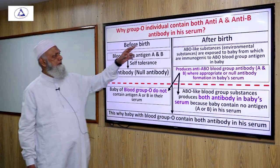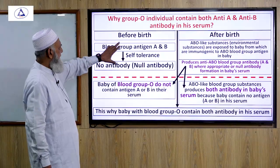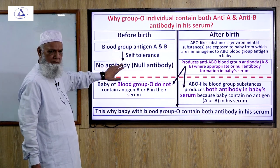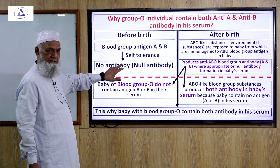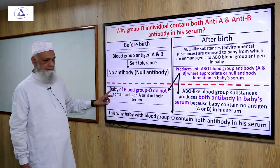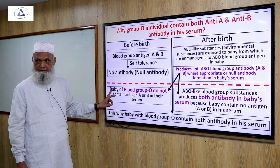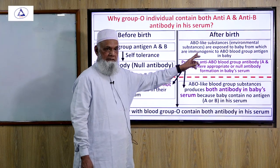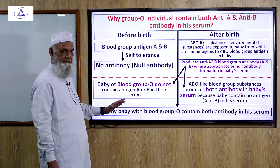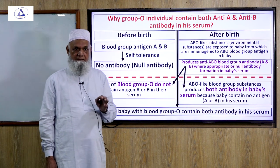Why do group O individuals contain both anti-A and anti-B antibodies in their serum? Before birth, A and B are self-tolerant. Group O individuals have no antigen — no antigen A and no antigen B. When exposed to ABO-like substances, since there is no antigen on their red cell surface, both A and B act as foreign particles. So both anti-A and anti-B are produced by the child's immune system.